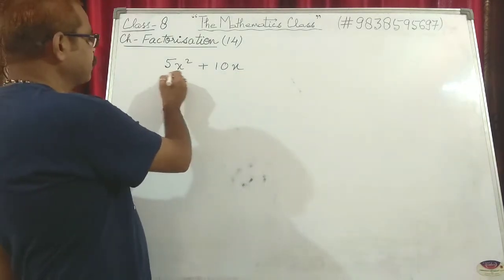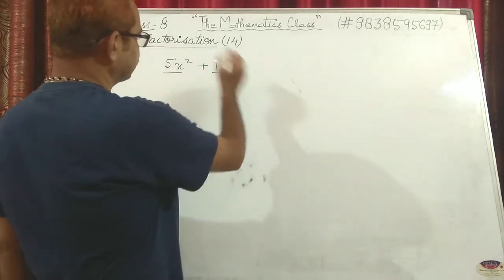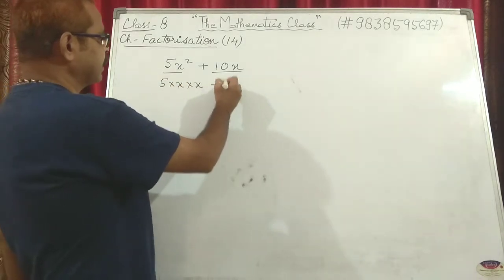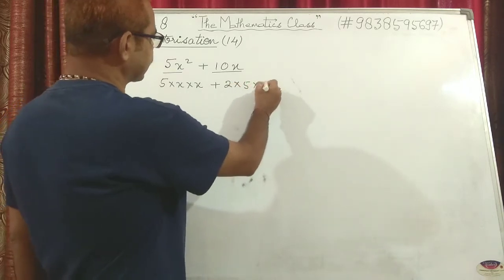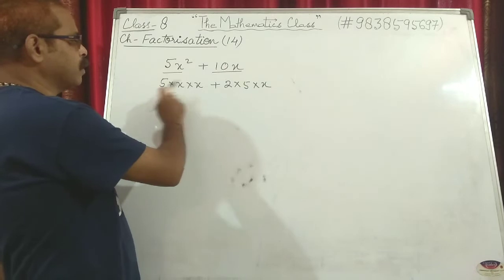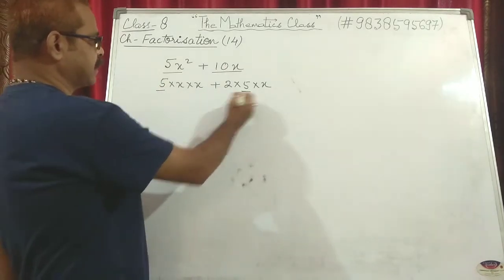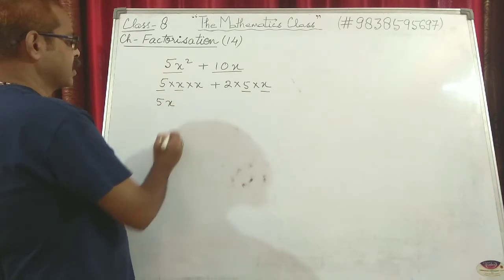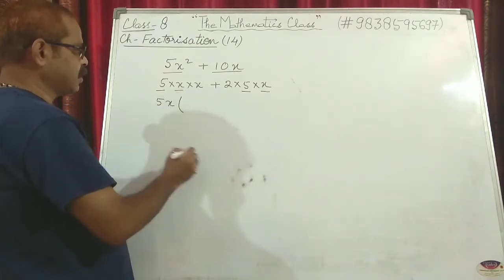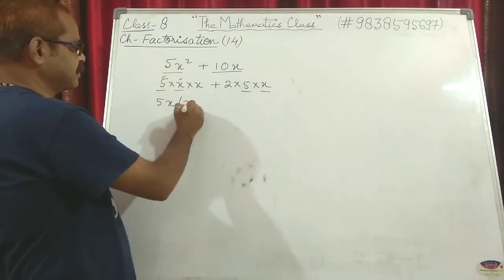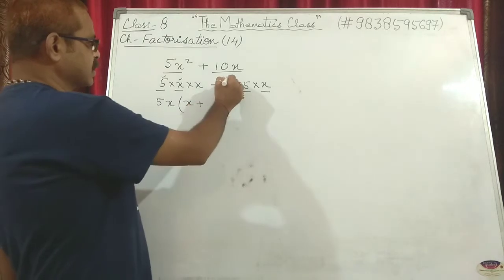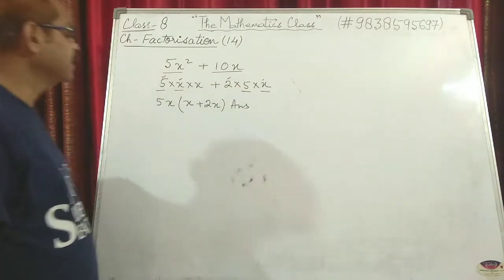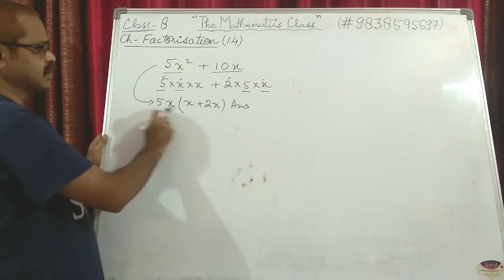What you will do is find the factors of 5x² and the factors of 10x. 5x² can be written as 5 into x into x, then plus 10 can be written as 2 into 5 into x. Now find what is common: the numerical value common is 5, and the algebraic value common is x. So we take 5x outside. What is left inside the bracket? From the first term, x is left, then plus, and from the second term, 2 is left. So the answer is 5x(x + 2).